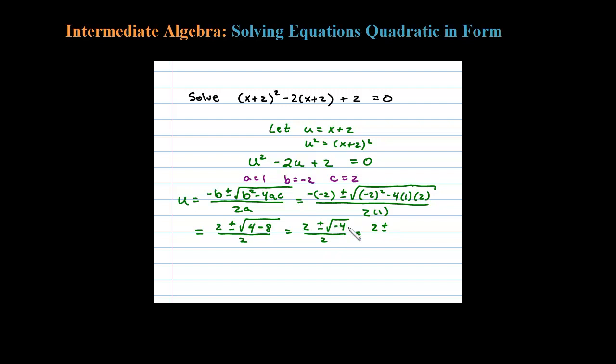So 2 plus or minus the square root of -4 is 2i, all over 2. The square root of 4 is 2, and the square root of -1 is i.